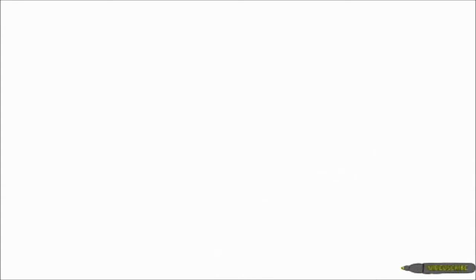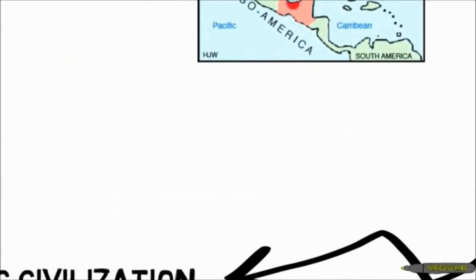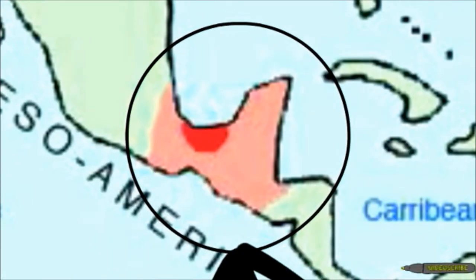Located near the tropical Atlantic coast of what are now the Mexican states of Veracruz and Tabasco, the Olmec were one of the most influential early Mesoamerican civilizations.